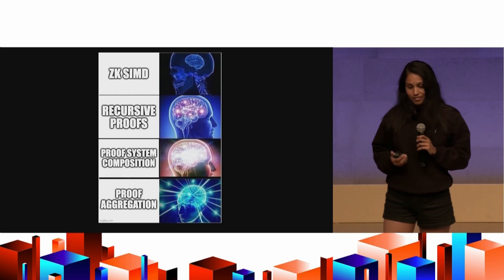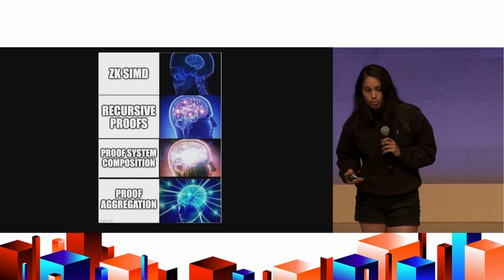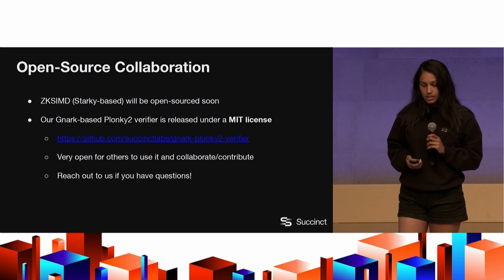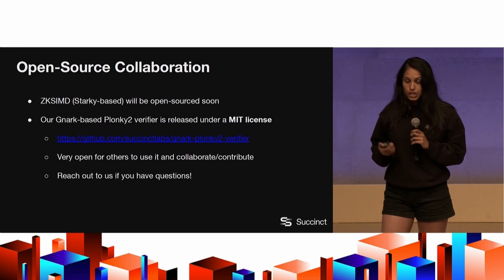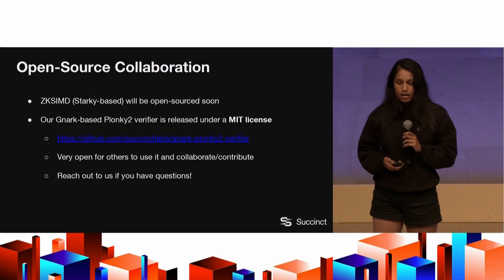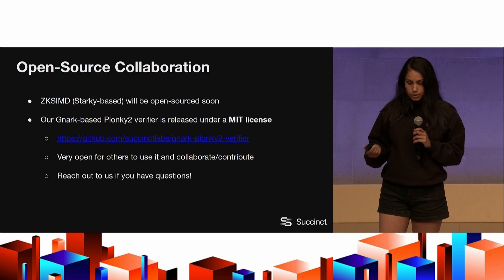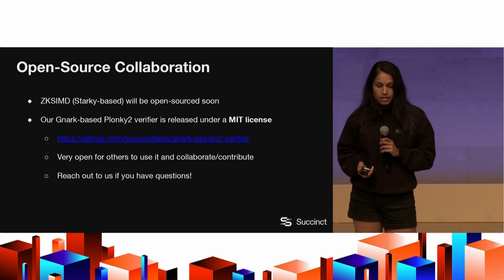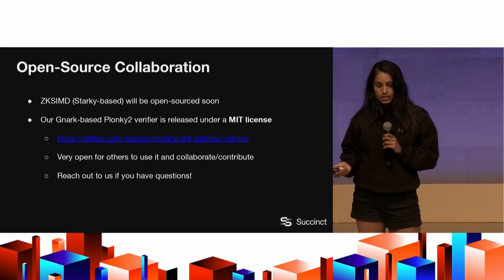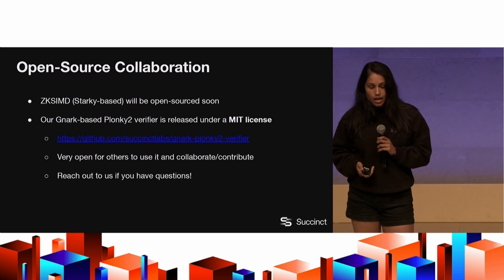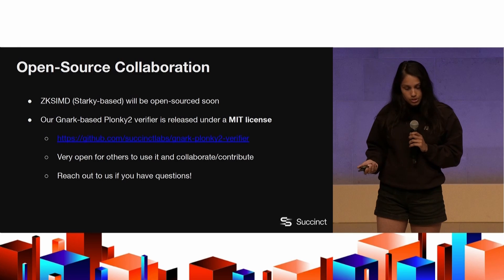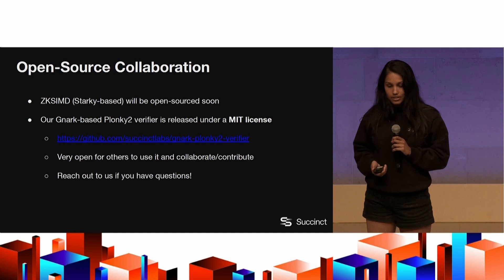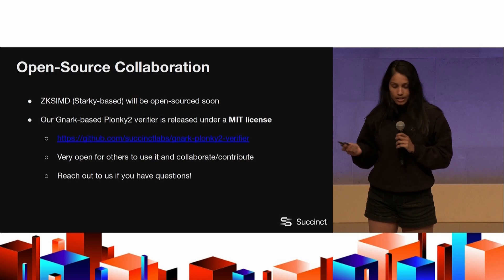This is a summary of all the ways we stacked these different techniques to make something fast enough and feasible to verify in the EVM. Our ZK SIMD Stark-based framework will be open-sourced soon — written generally so that if you have a function you want to prove over a set of inputs in parallel, you can write a circuit with it. We want people to contribute, collaborate, and use it for whatever parallel functions they want to prove. Our Gnark-based Plonky2 verifier is already released under an MIT license — available at the linked repo. We'd love for other Plonky2 users to use it to verify proofs on EVM and collaborate. Talk to me after if you have any questions.